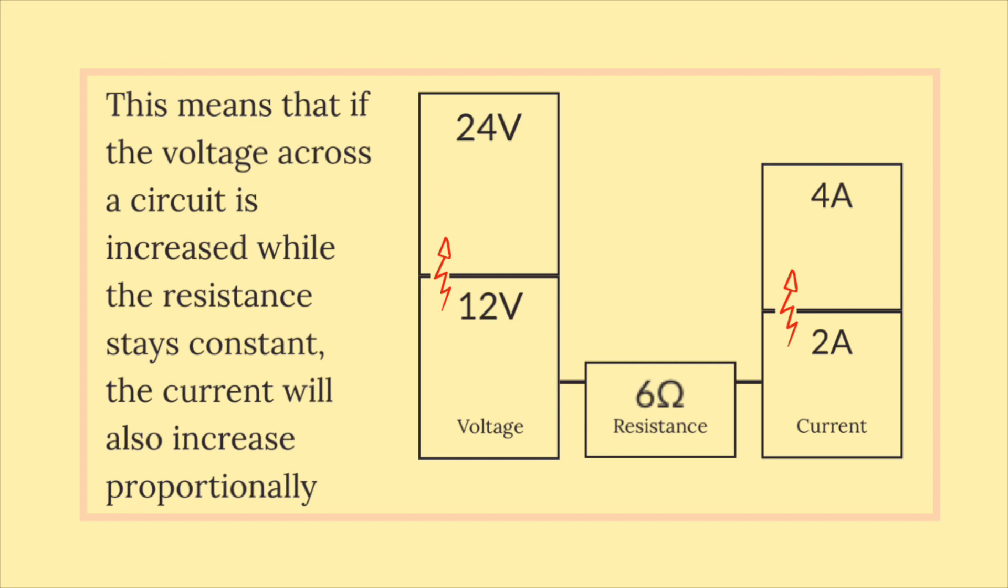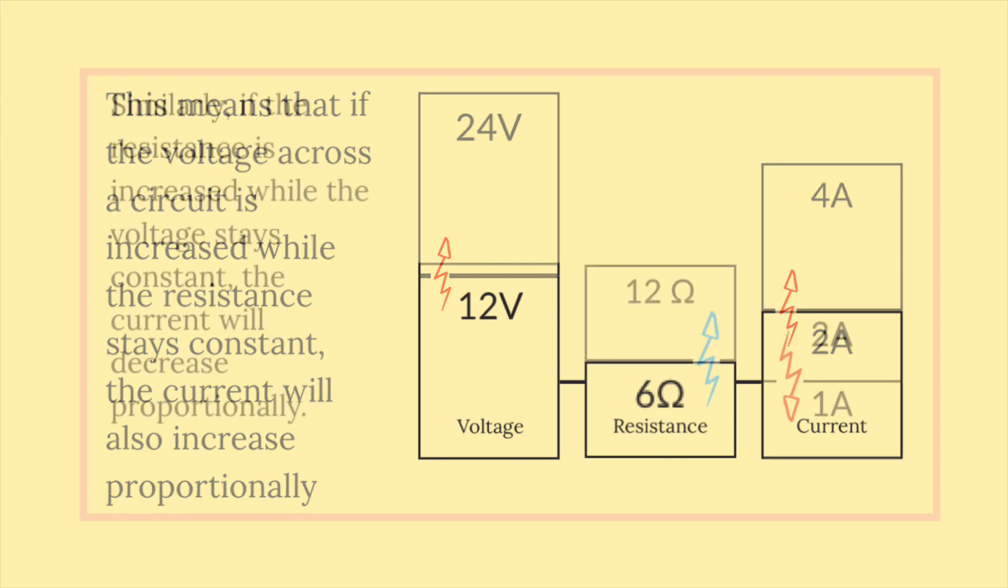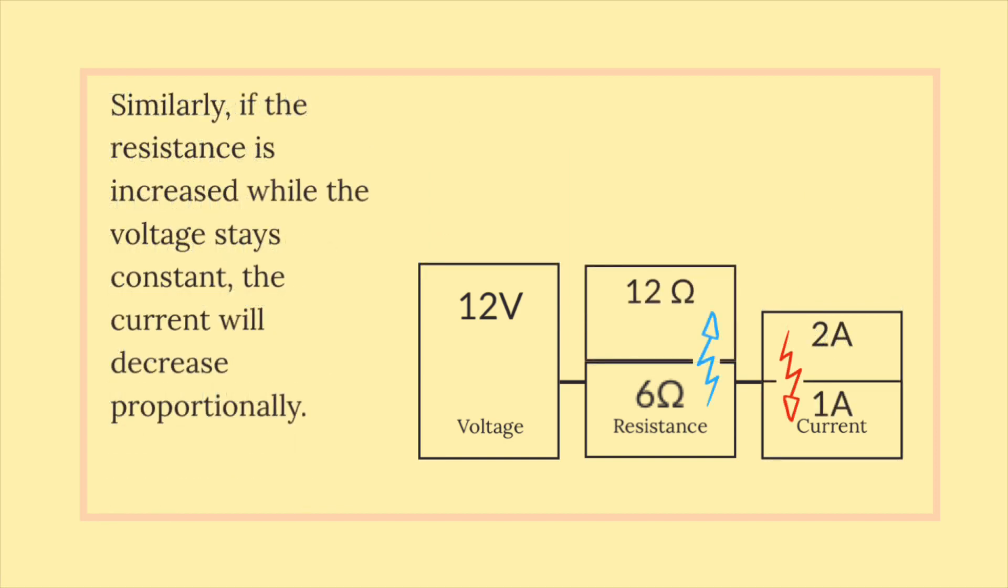This means that if the voltage across a circuit is increased while the resistance stays constant, the current will also increase proportionally. Similarly, if the resistance is increased while the voltage stays constant, the current will decrease proportionally.